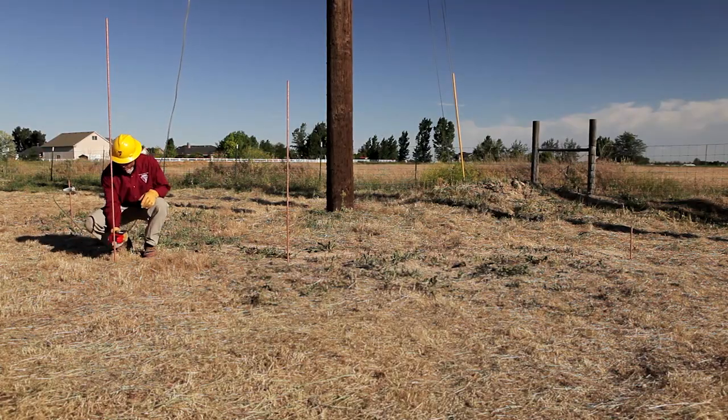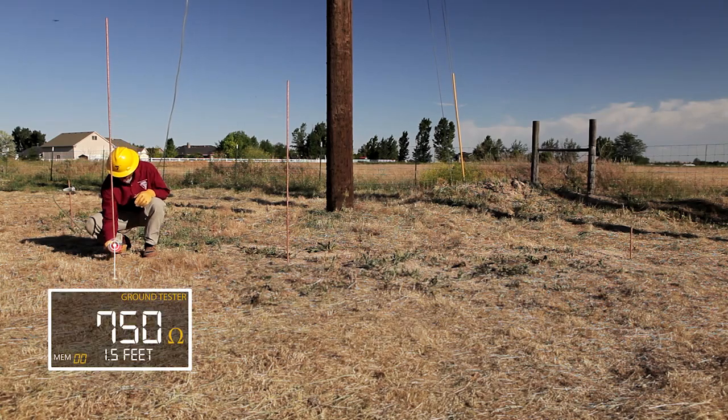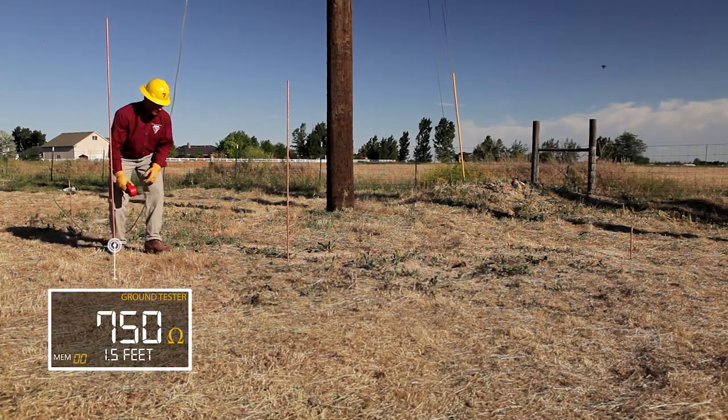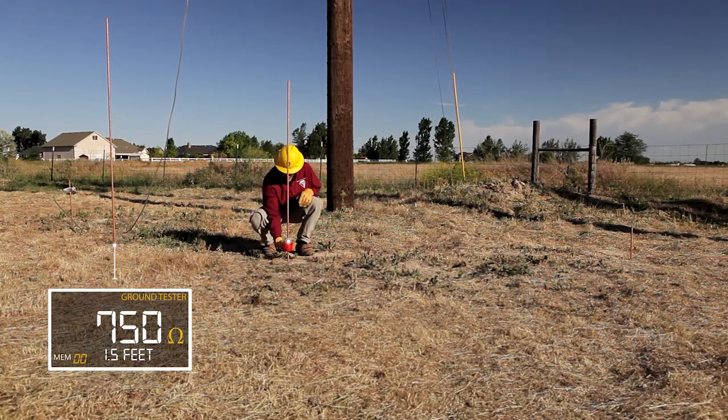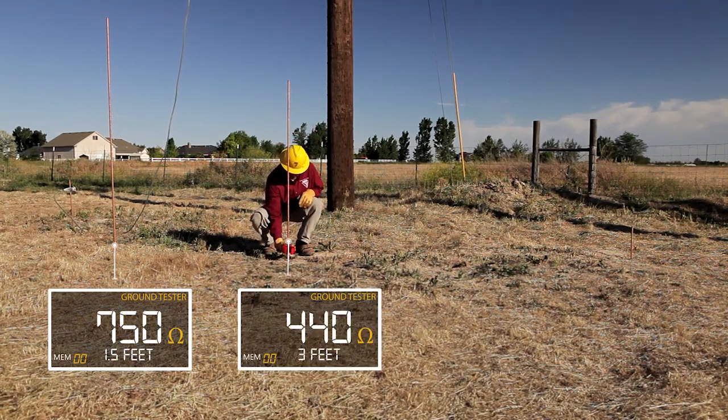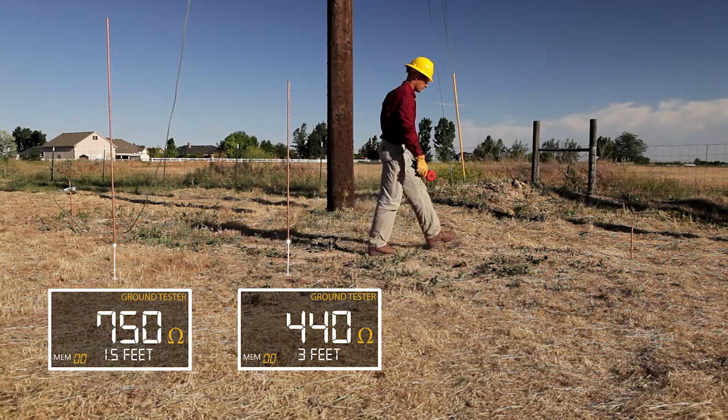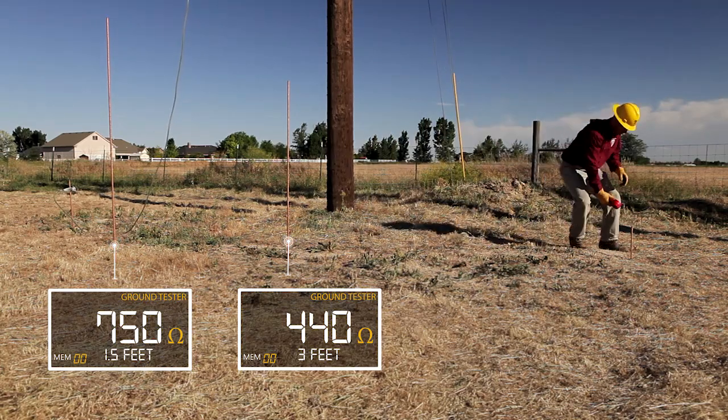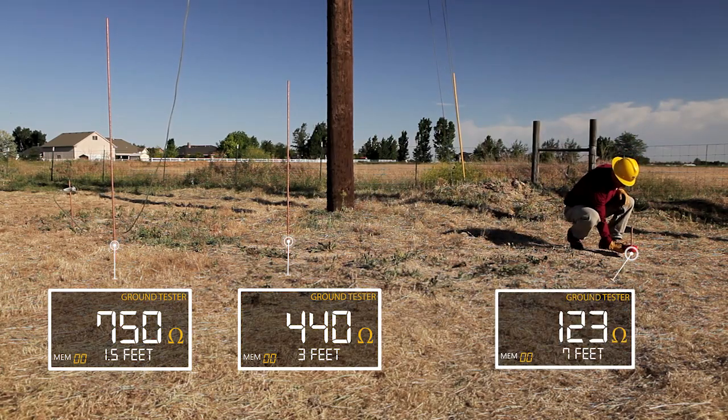Our first ground rod is only driven one and a half feet deep and has a ground resistance of 750 ohms. Our second ground rod is three feet deep and has a ground resistance of 440 ohms. And our last ground rod was driven seven feet deep and is reading 123 ohms.